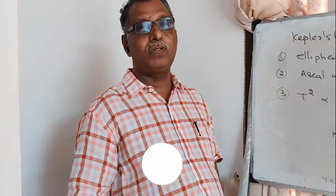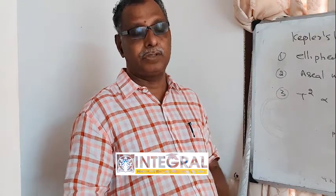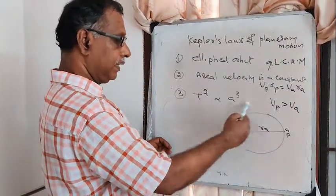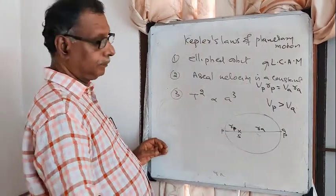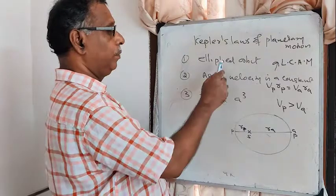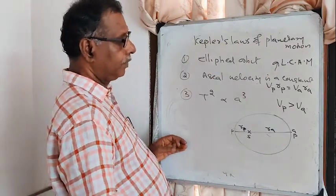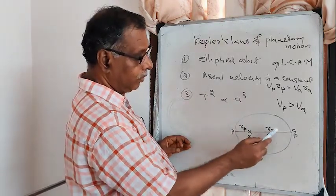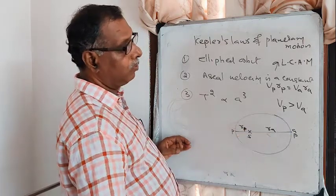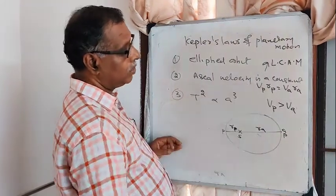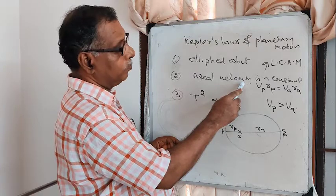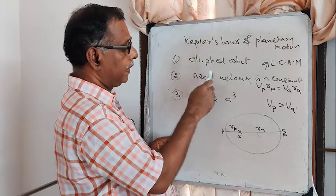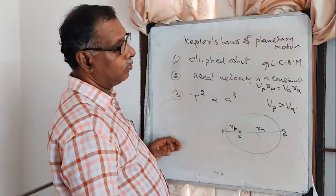Kepler's First Law: every planet moves around the sun in an elliptical orbit, not a circular one. Kepler's Second Law: the aerial velocity (line joining sun to planet sweeping equal areas in equal time) is constant. This follows from conservation of angular momentum.